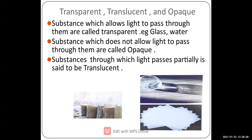The third type: a substance through which light passes partially is called translucent. Translucent means the light may or may not pass through. Paper is an example of a translucent substance — you can partially see through it and partially not. Translucent is a mixture of transparent and opaque properties.